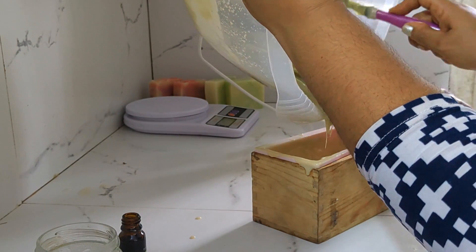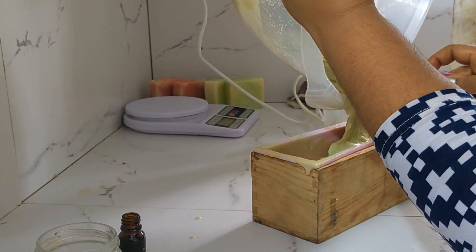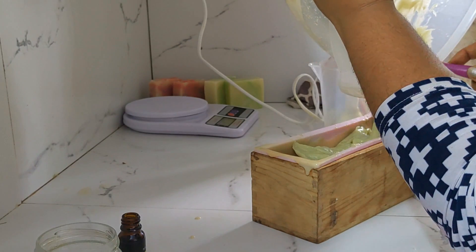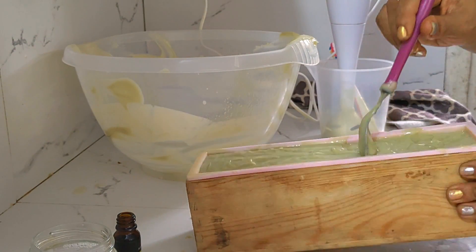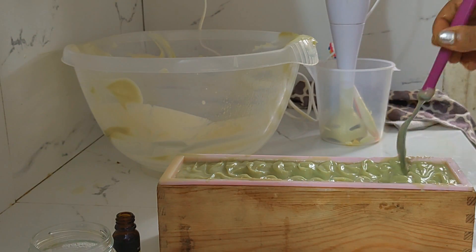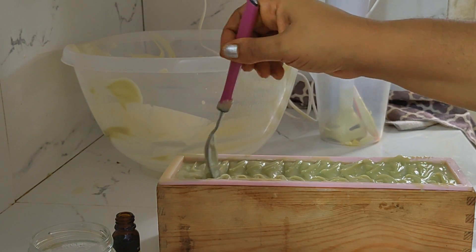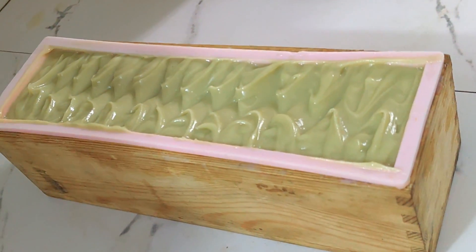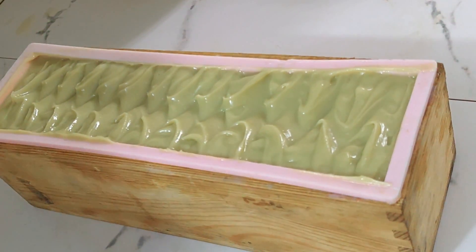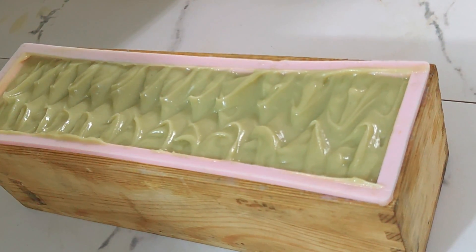You can see here how thick the soap mixture is. I'm working quickly and going to make sure there are no air bubbles in the soap by banging it a little bit onto the counter. Then I'm going to use my spoon just to make a little design on top to make it look pretty. It's now time for our soap to set so we're going to leave it on a flat surface and come back in a couple of days to cut it.